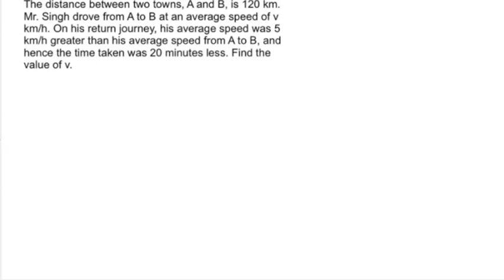Let's take a look at everyone's favorite algebra problem. The distance between two towns, A and B, is 120 kilometers. Mr. Singh drove from A to B, town A to town B, very cleverly named mind you, at an average speed of V kilometers per hour. So we don't know what it is. On his return journey, his average speed was 5 kilometers per hour greater than his average speed from A to B, so it took him 20 fewer minutes to get there. Find the value of V.